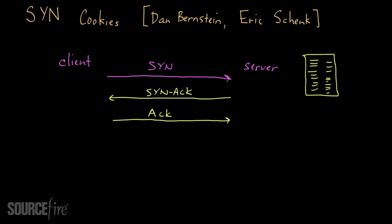Let me describe it conceptually first, then talk about how it's actually implemented. Imagine there's a bunch of information that's typically allocated as part of a SYN request. What the server is going to do is take this information and cryptographically protect it, then send this protected information back with the SYN ACK. When the client responds with the ACK, it has to include not only the ACK but the same information that was transmitted to it by the server. The server can then take this information and reconstruct what should go on the table.